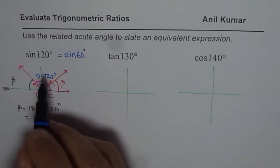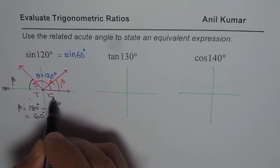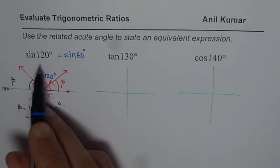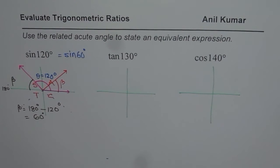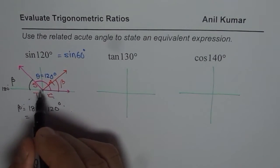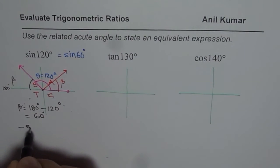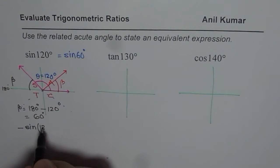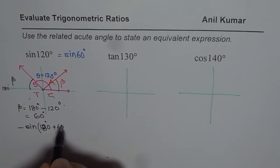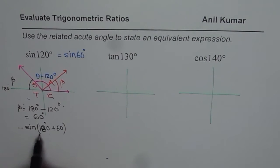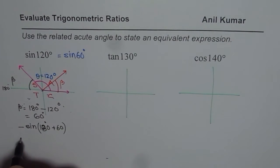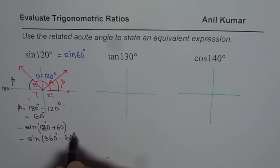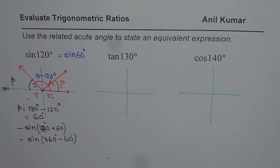Some of you can also give examples using other angles. Sine will be negative in those quadrants, so you could also write the answer as negative of sine of 180 plus 60 degrees, or negative of sine of 360 minus 60 degrees. Those are also correct answers, but the preferred answer is sine of 60 degrees.